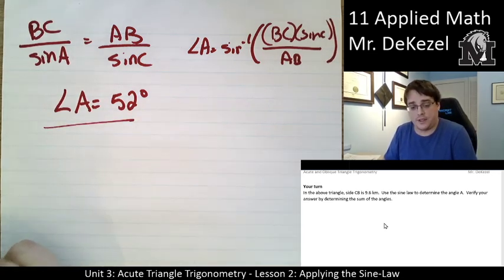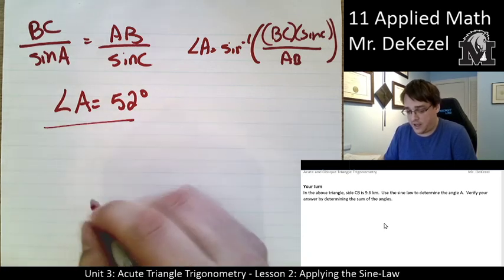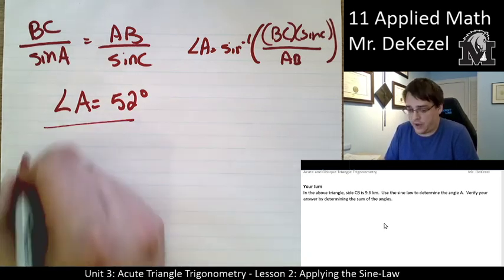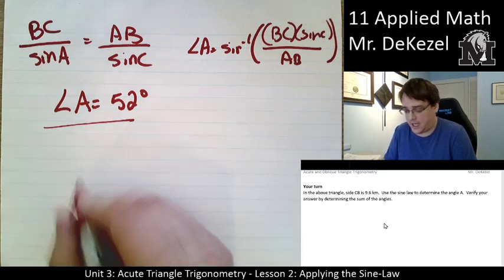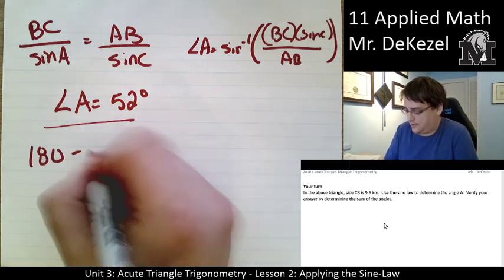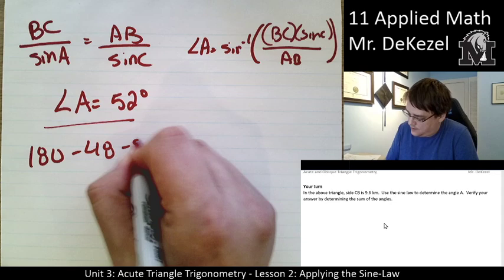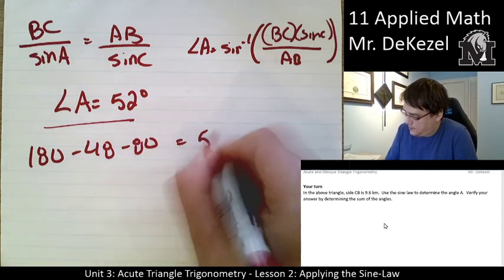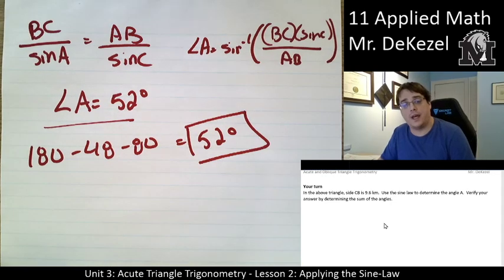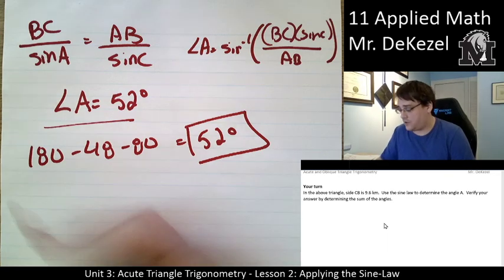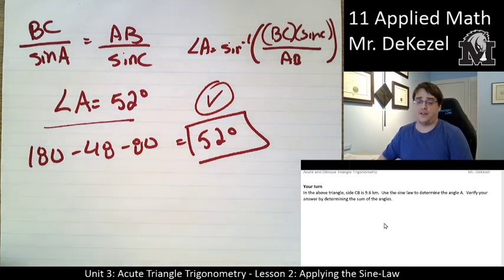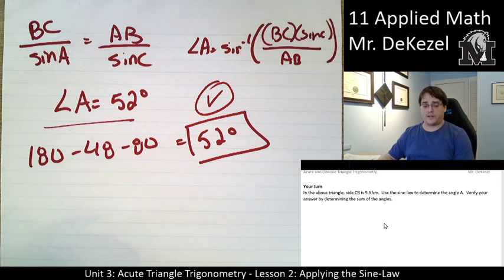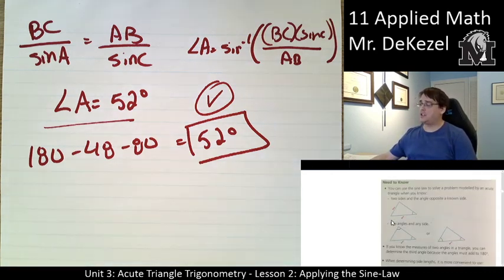We can verify by using the sum of the angles. So we found that we had one angle to be 48 degrees and one angle to be 80. So 180 subtract 48 degrees subtract 80 gives us 52 degrees. So again, those match, which means that we've verified it to be correct. If you have any particular questions, please let me know. Check out the need to know section down here. And I hope to see you in class. Thanks so much for watching everyone.